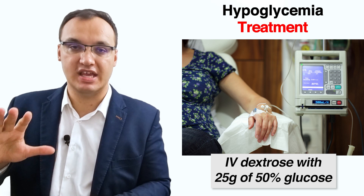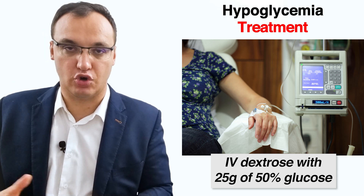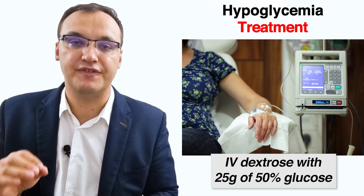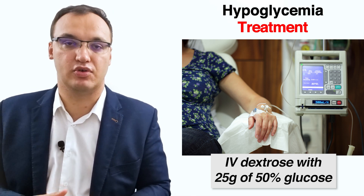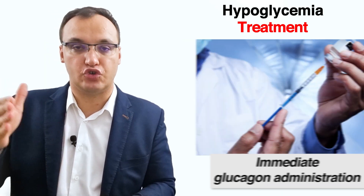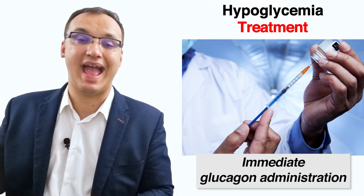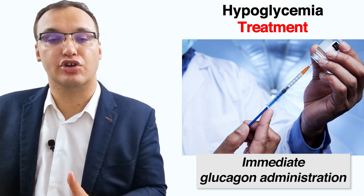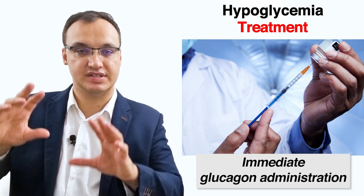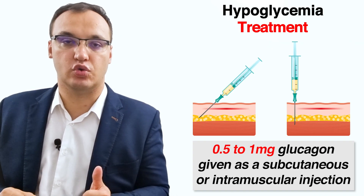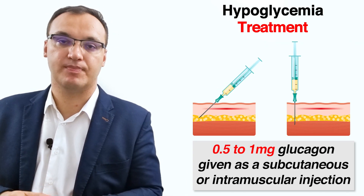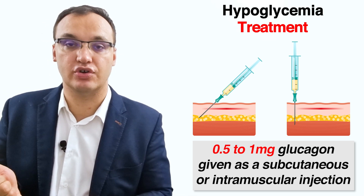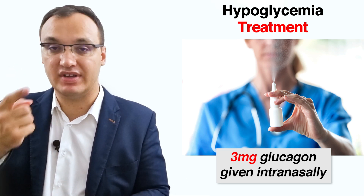Patients with impaired consciousness brought to the hospital should receive intravenous dextrose with 25 grams of 50% glucose to treat the hypoglycemia. Meanwhile, to treat hypoglycemia in a person with impaired consciousness and no established intravenous access, there should be immediate glucagon administration. The usual dose is 0.5 to 1 milligram given subcutaneously or intramuscularly, or 3 milligrams given intranasally. Further treatment depends on how severe the symptoms are.